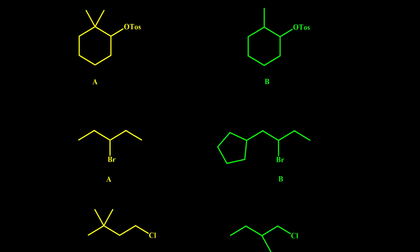Here are more examples. For this example, both carbons are secondary, but A has two methyl groups close to the leaving group and B has only one, so A is more bulky and has more steric effect, so B is faster.